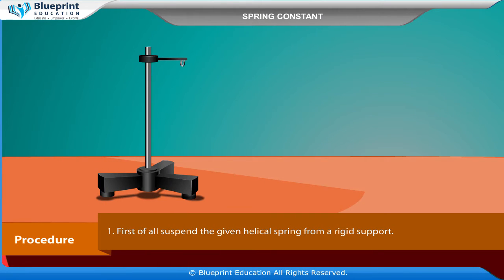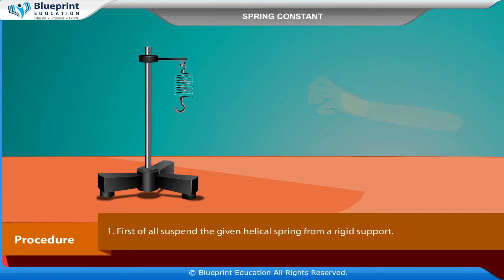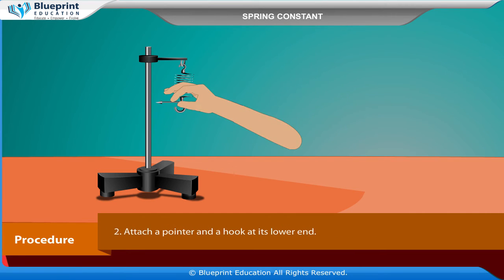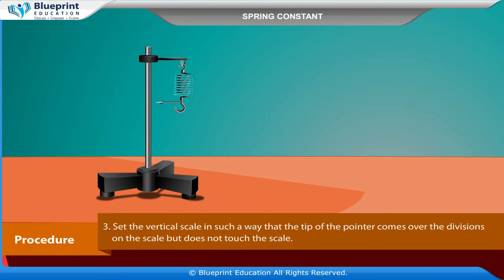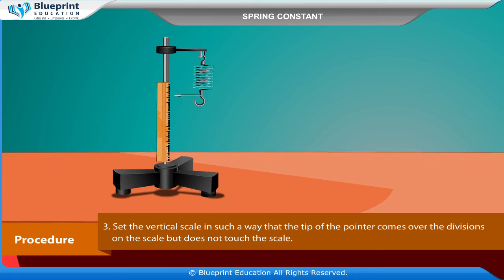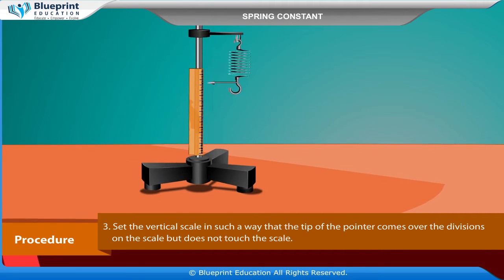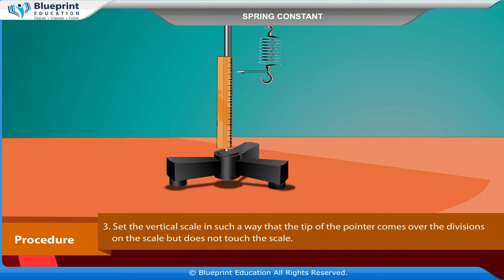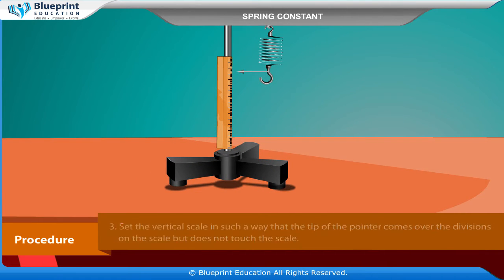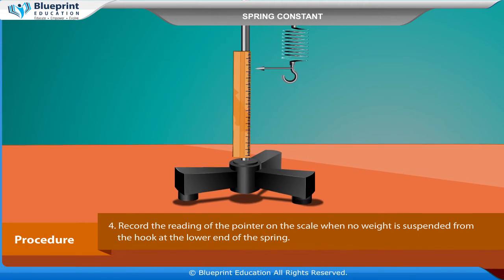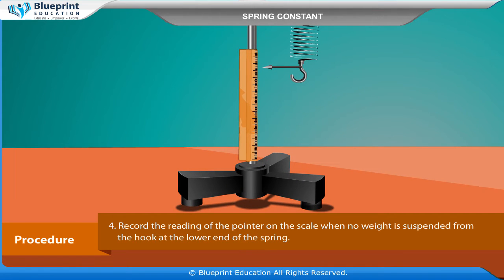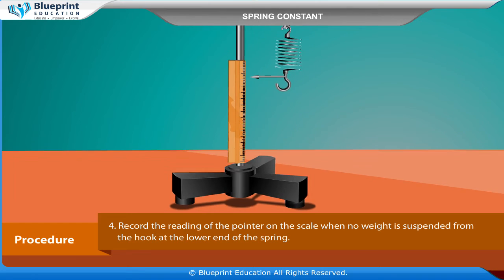Procedure: First of all, suspend the given helical spring from a rigid support. Attach a pointer and a hook at its lower end. Set the vertical scale in such a way that the tip of the pointer comes over the divisions on the scale but does not touch the scale. Record the reading of the pointer on the scale when no weight is suspended from the hook at the lower end of the spring.